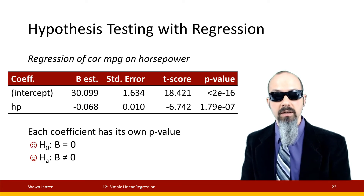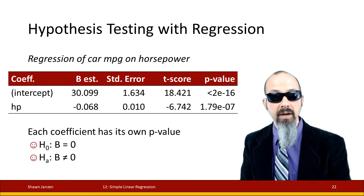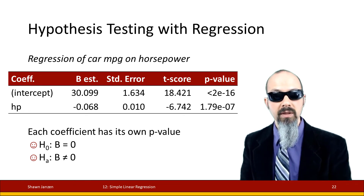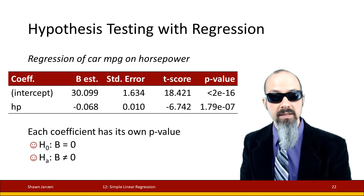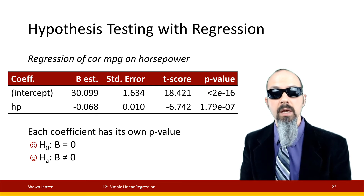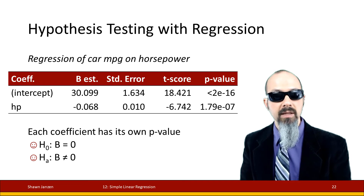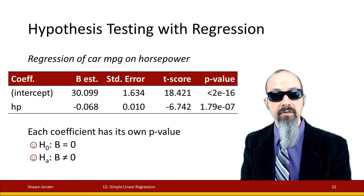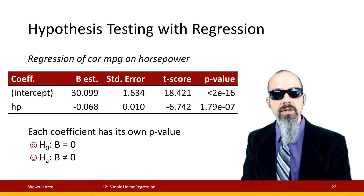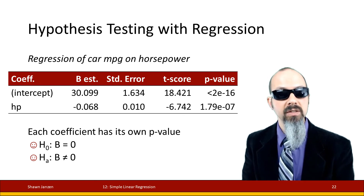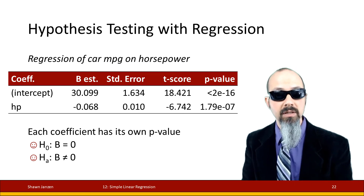Let's talk about those p-values. Each coefficient has its own p-value. The null hypothesis assumes the coefficient value is 0, and the alternative says anything but 0. If the slope is 0, that means x has no effect on y — no matter where x moves, there's no change in y. This mirrors what we saw with correlations, where a correlation of 0 indicated no associative effect.